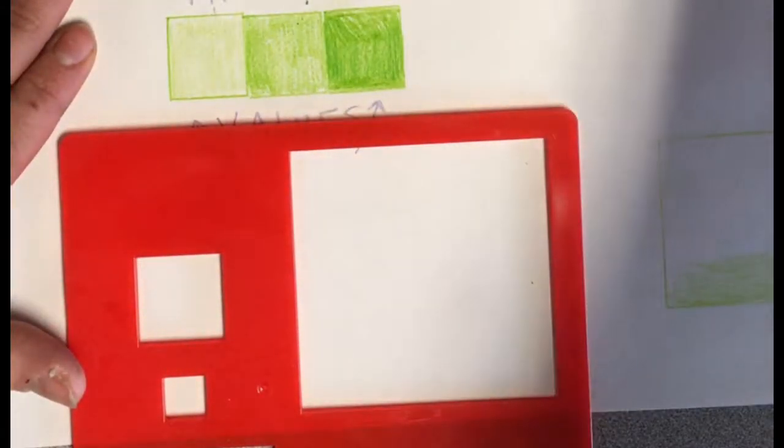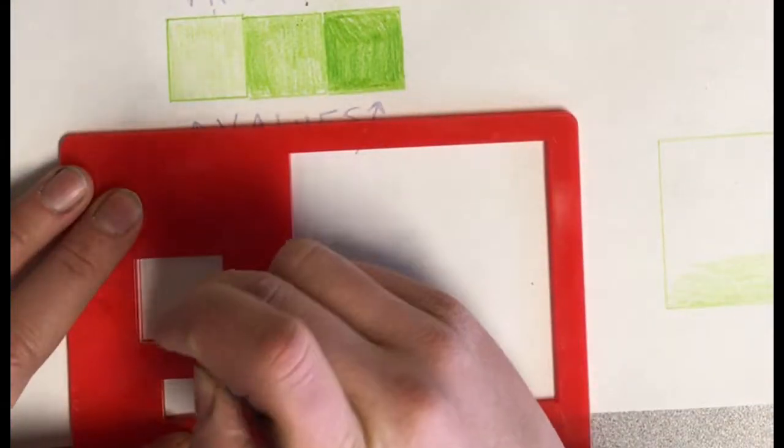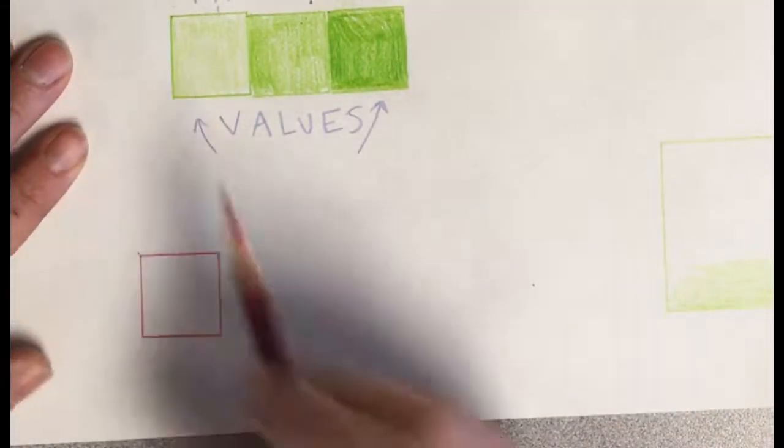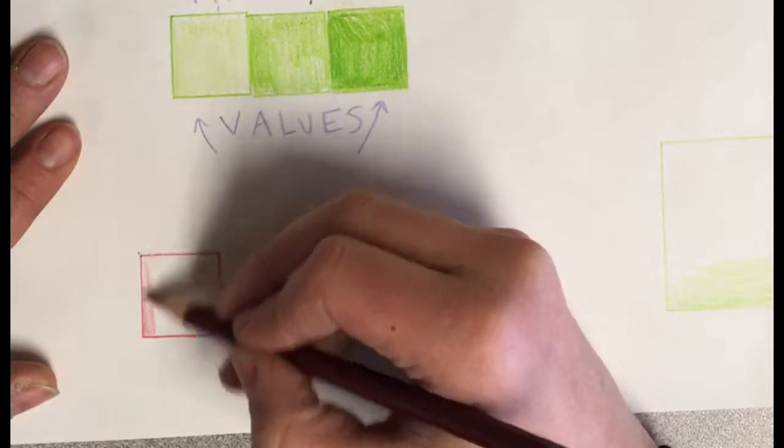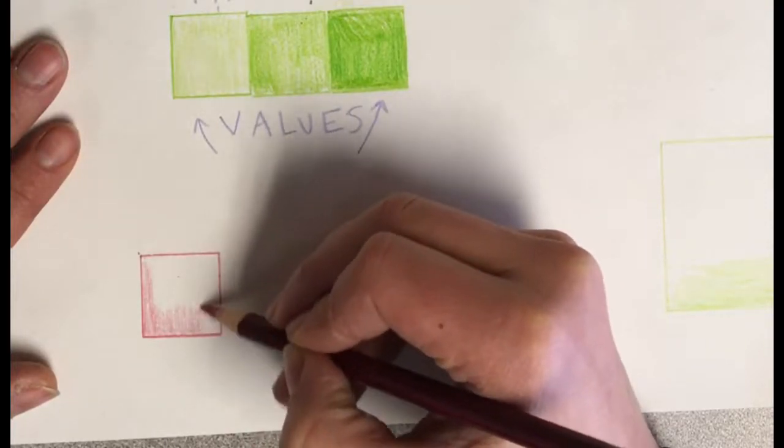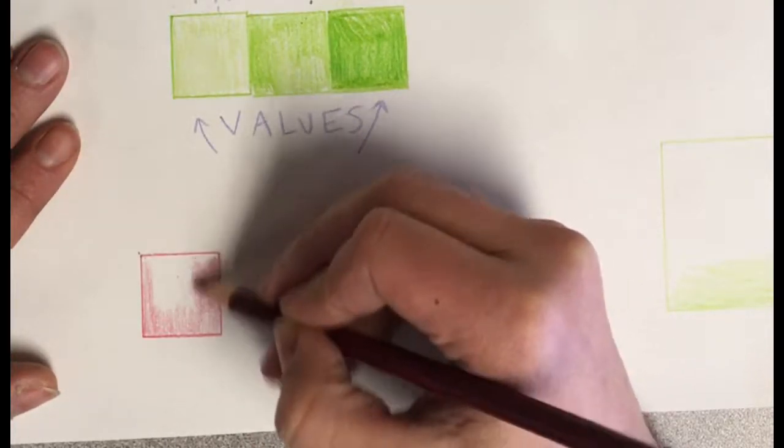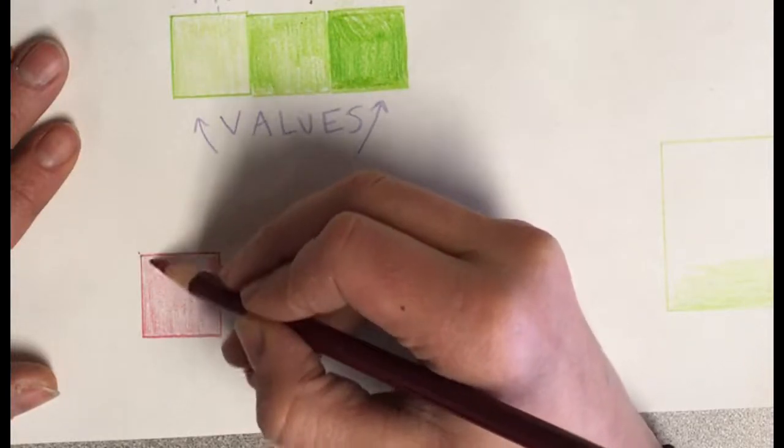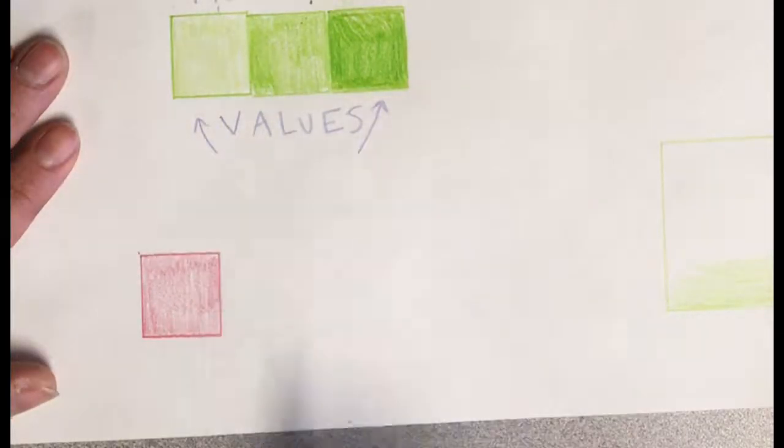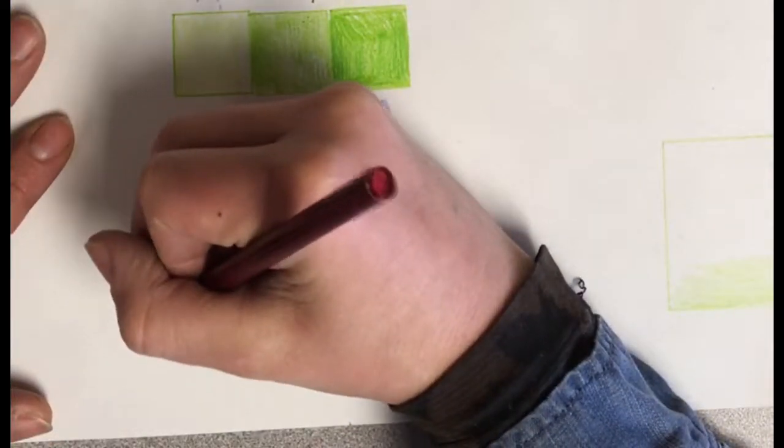Next, I'll show you how you can create different values not by changing the pressure or how hard you press down, but instead by layering. Here I'm coloring in my box using that light pressure I used with my first green box. I have a light value.